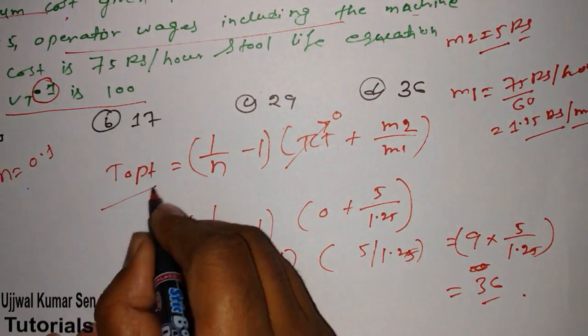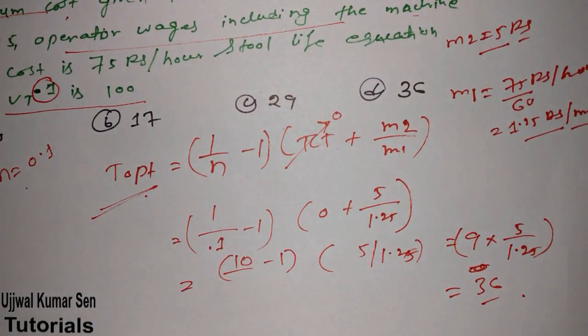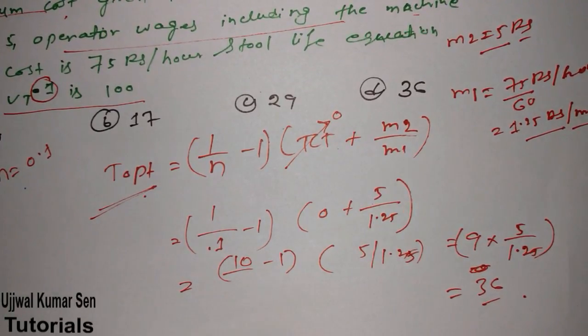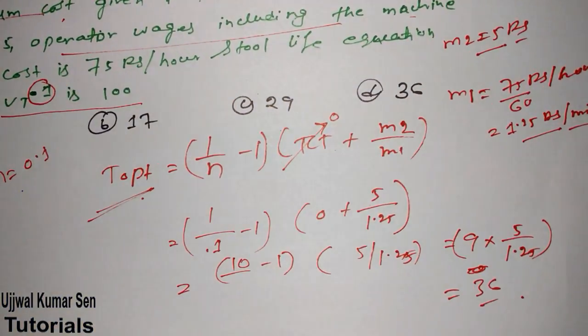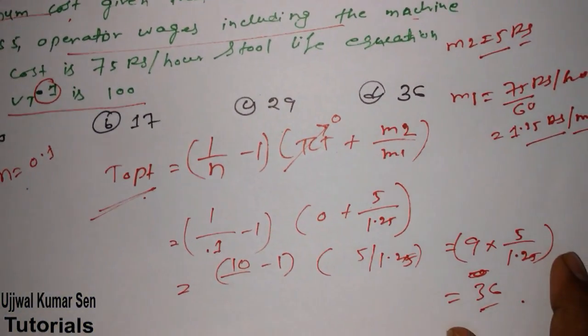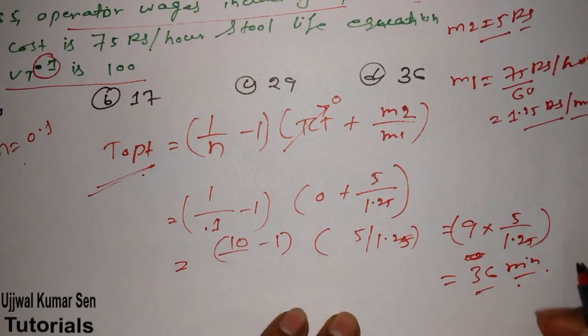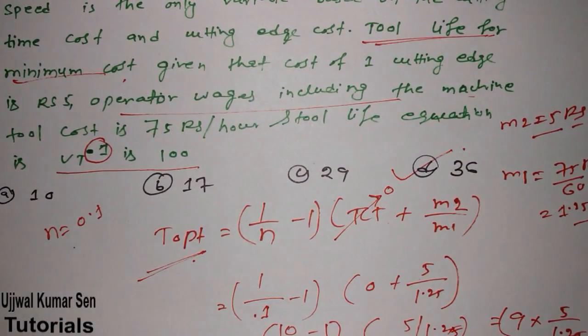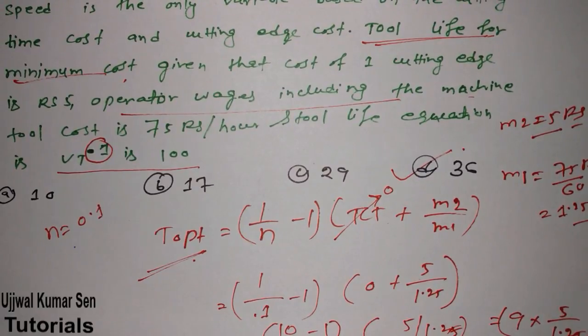Now you can see this optimum time, optimum time for the tool life minimum cost. So optimum time for the tool life is given as 36. But we have to choose the unit. Can you guess the unit of this? Yes, the unit is in minutes. So which one is the right answer? That is D. So this is how you can solve questions related to T-Optimum.